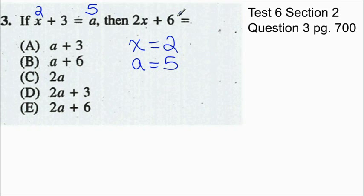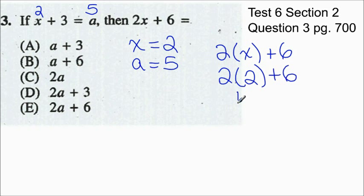Now we're looking for what the value of 2x plus 6 is. Well 2 times x plus 6 would equal 2 times x in this case is 2, plus 6. So we get 2 times 2 is 4 plus 6 and that equals 10. So our answer here, what does 2x plus 6 equal? It equals 10.